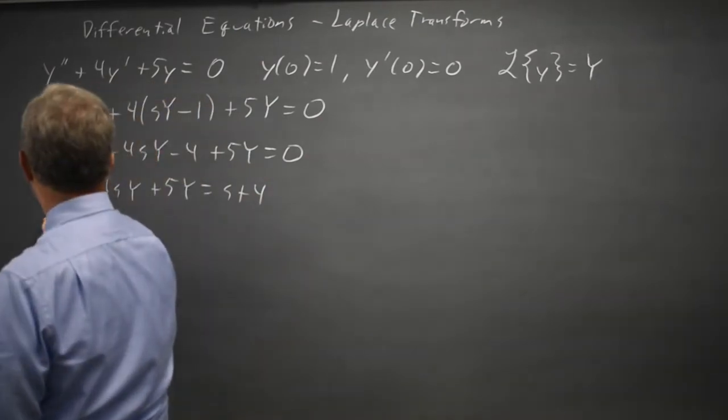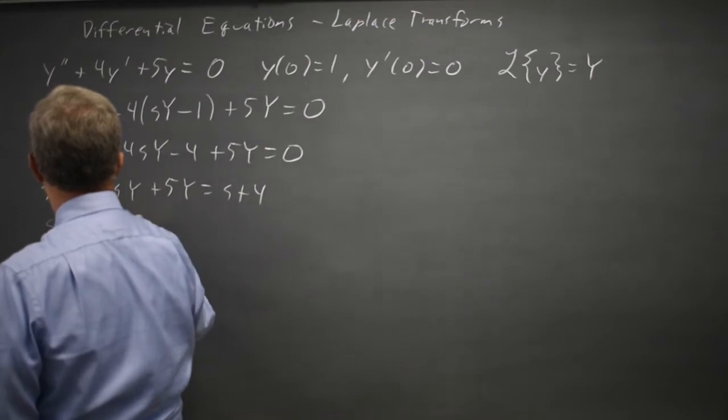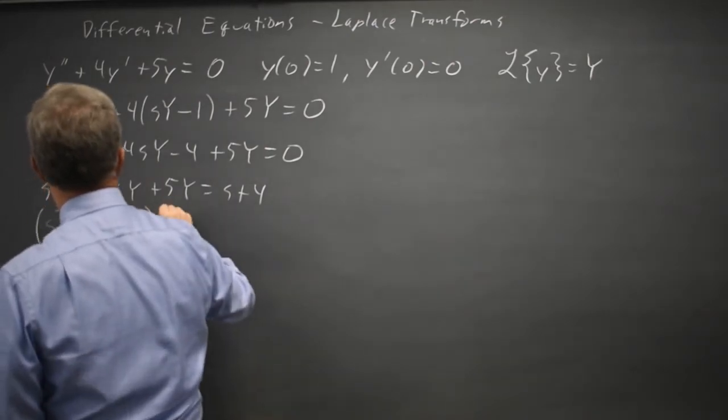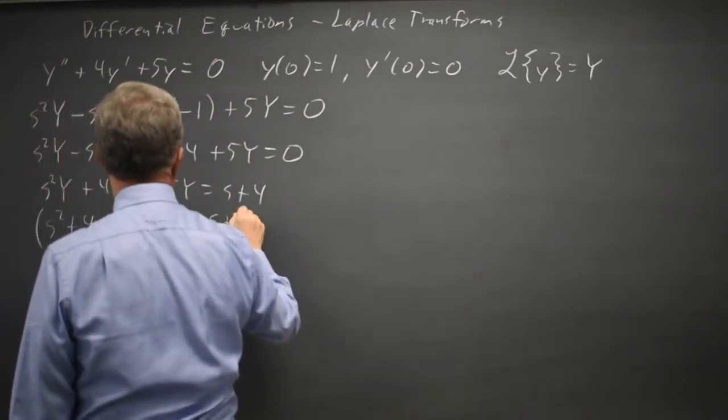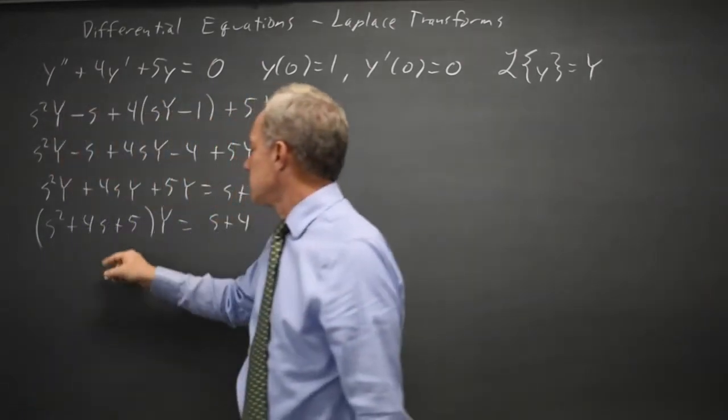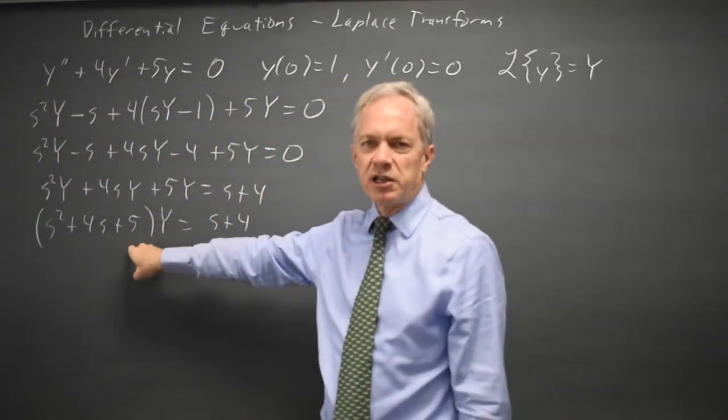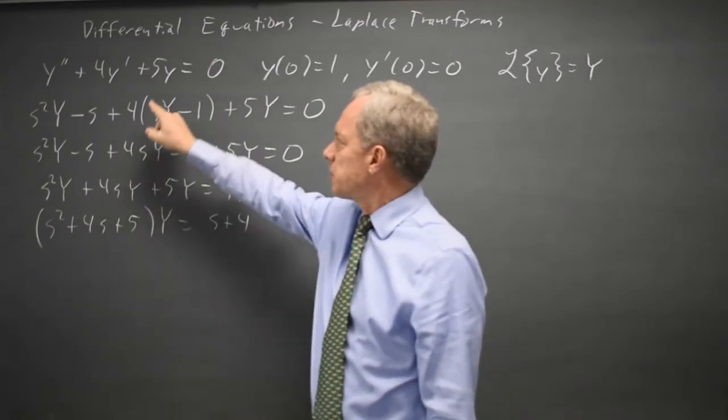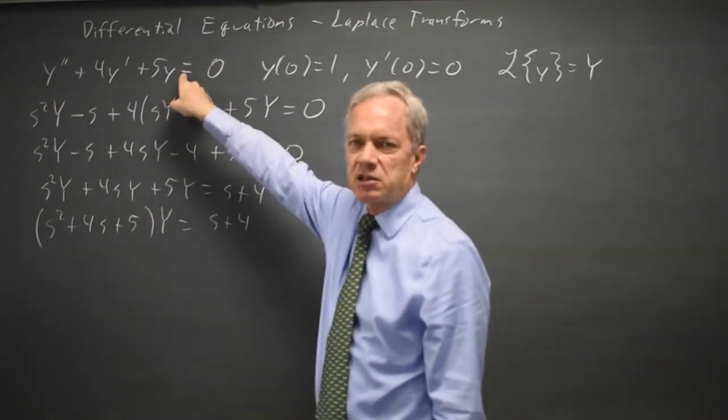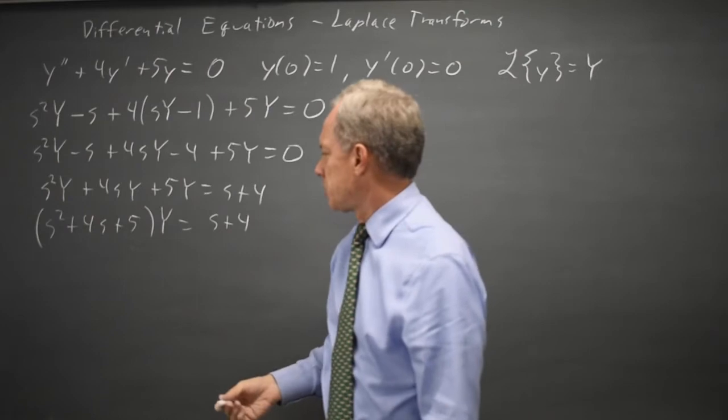Factoring out the common factor of Y: s squared plus four s plus five uppercase Y equals s plus four. Now I notice that the coefficient polynomial here is the same characteristic polynomial I would get if I substitute in y equals e to the rt and solve it by that method.